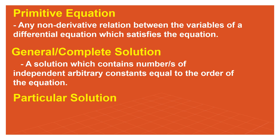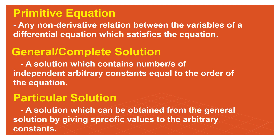The particular solution is a solution which can be obtained from the general solution by giving specific values to the arbitrary constants. Once the arbitrary constants — a, b, c — are replaced by numbers, the resulting equation is called the particular solution.